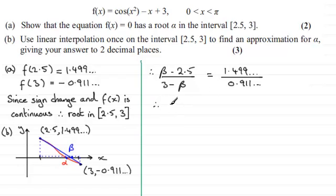And if you do this, I'm just going to multiply both sides by 3 minus β. I've got β minus 2.5 then equals—working this out you find you get 1.645 and so on—and that's multiplied with 3 minus β then.